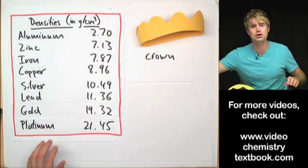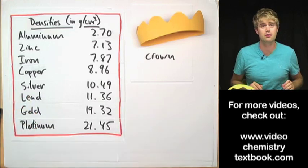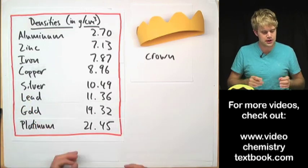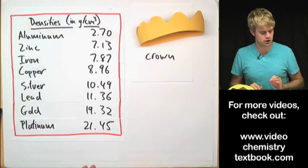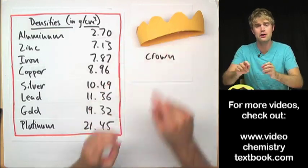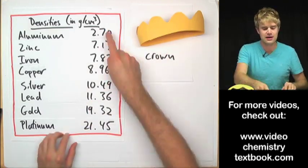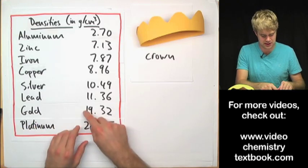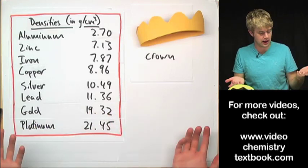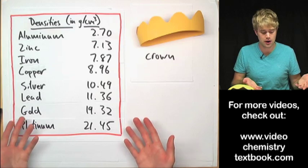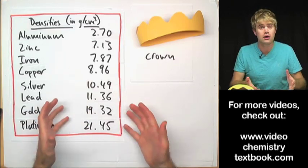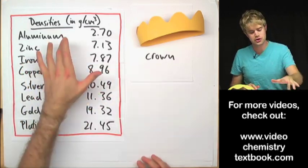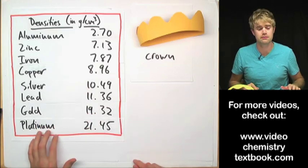Now, density is actually something that we can measure. There's a number associated with it. So Archimedes realizes that he can measure the density of the metal that makes up the crown and then he can figure out what the number is and see if it matches up. If it's 19.32, then it's probably gold. But if the number is lower, chances are another cheaper metal has been mixed in.